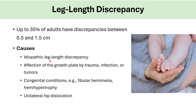Causes include idiopathic leg length discrepancy, affection of the growth plate by trauma, infection, or tumors. Congenital conditions such as fibular hemimelia, hemihypertrophy, unilateral hip dislocation, or DDH in one hip.